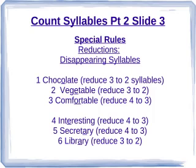Now finally, I want to look at the third group of examples when the native speaker reduces the number of syllables in a word. This is described as disappearing syllables. Number one: CHOCOLATE. Many people read the word as CHOC-O-LATE with three syllables, but native speakers reduce it to two: CHOC-LATE.